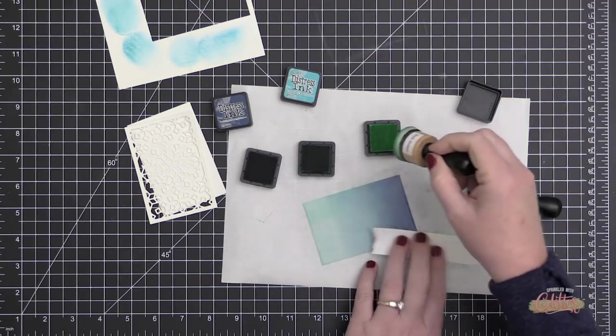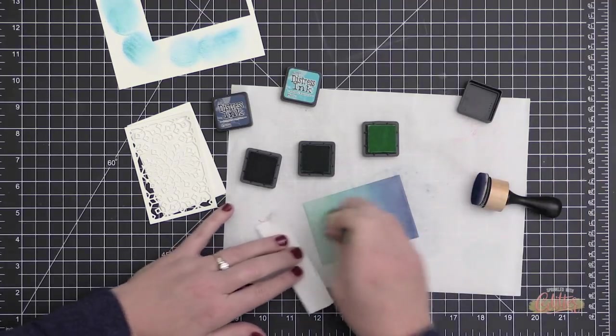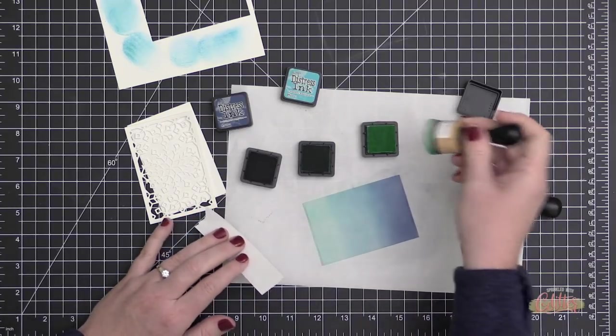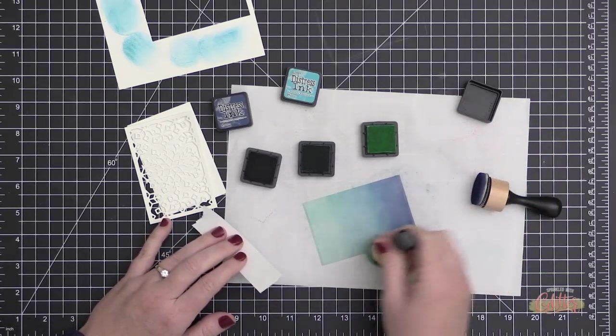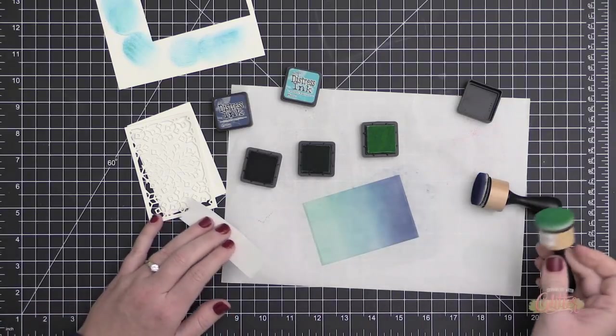As I go, I'm going back and forth between the colors, slowly building up this color. Once I have the blending how I want it, I'm going to take this and use my embossing tool to heat set this really well.